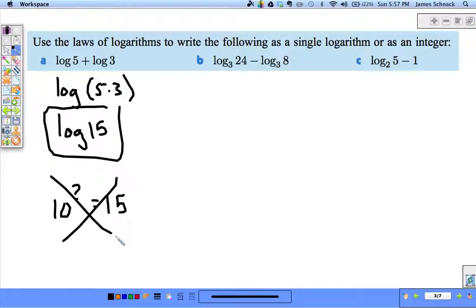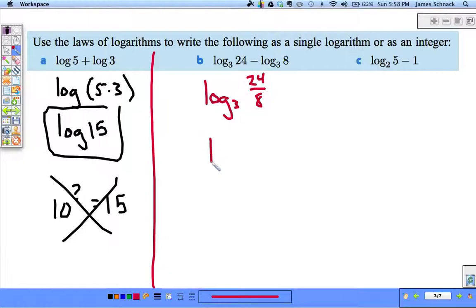Pause the video, see what you can come up with for B, and see if you're feeling special today. Alright, B. Same bases, log base 3. We are subtracting two logarithms of base 3. We can take and combine them together into one base 3 using division. 24 divided by 8 is 3. Now, let's think about this. 3 to some power, what gives us 3? Well, that's 1.